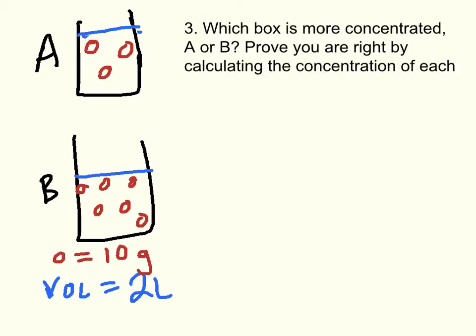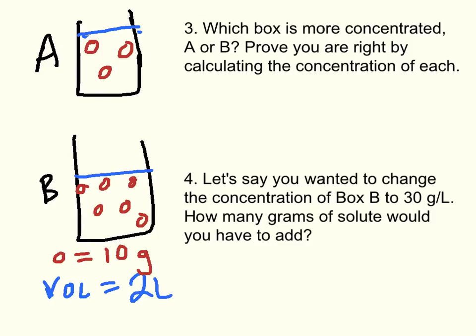Problem three asks, which is more concentrated, A or B? Prove you are right by calculating the concentration of each. Well, box A has three red dots in the cup, and we know that one dot is 10 grams.